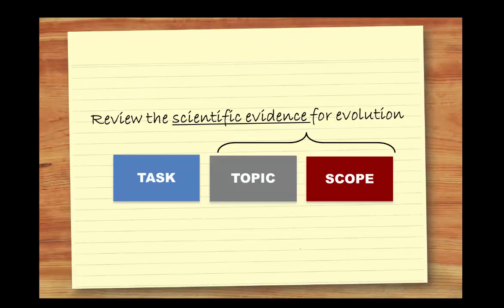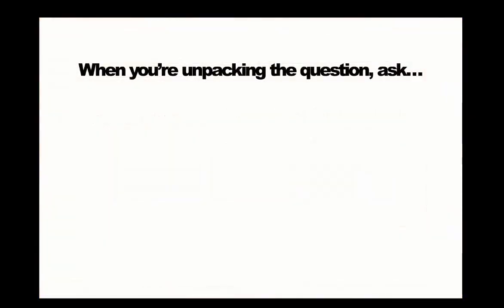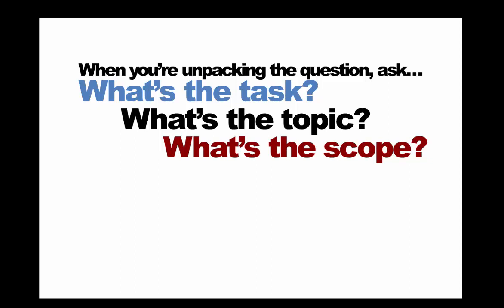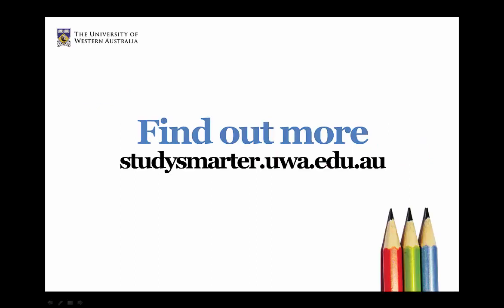Looking at the three key elements of the assignment together will ensure that you answer the whole question. So each time you get a new assignment question, ask yourself, what's the task, what's the topic and what's the scope? Unpacking the question first will keep you on track so when you start researching and writing, you'll know exactly what to focus on.